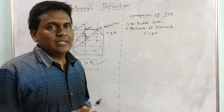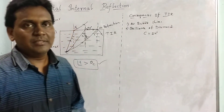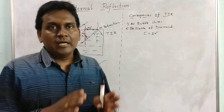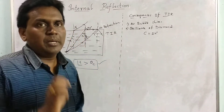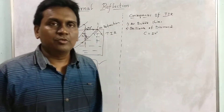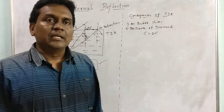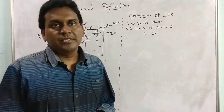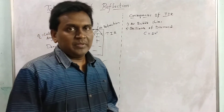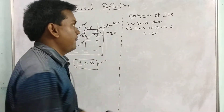Due to the lower critical angle, a greater total number of rays participate in total internal reflection. Additionally, diamonds have many cuts in their shape, and due to those cuts combined with total internal reflection, the brilliance of diamond takes place.